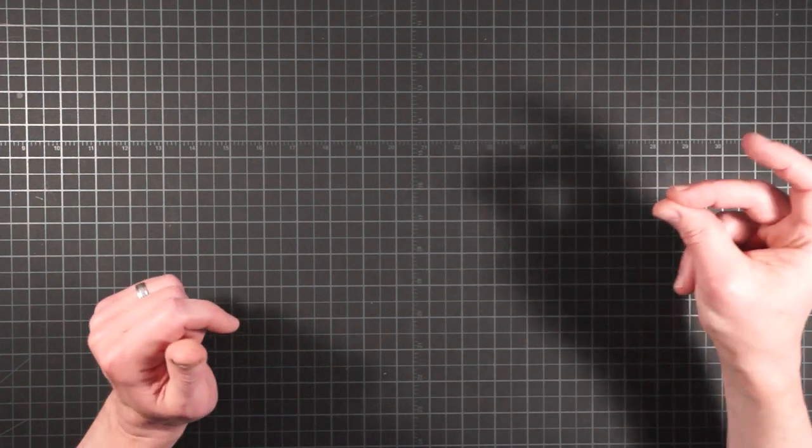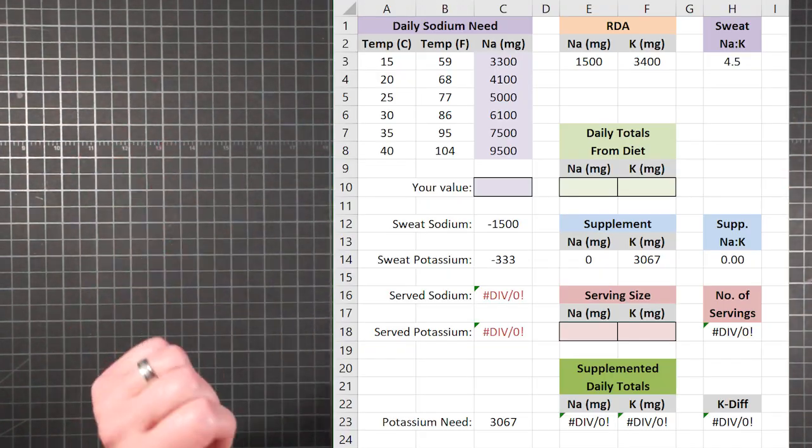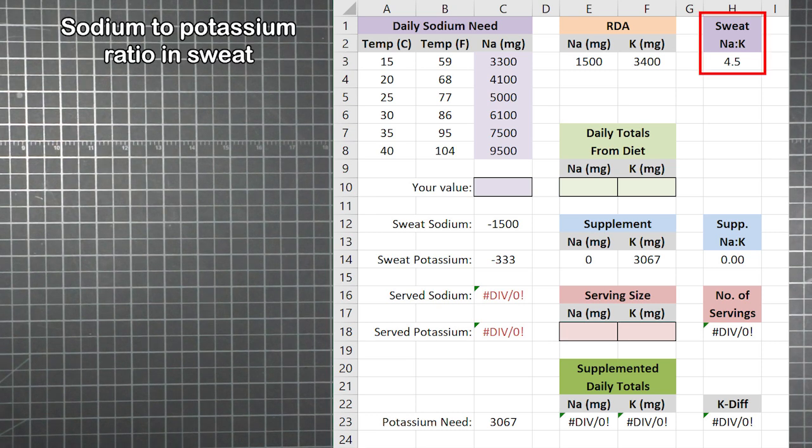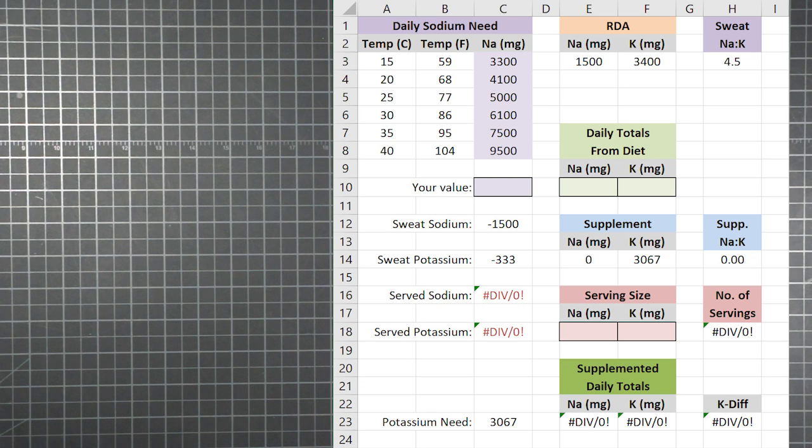And speaking of that calculator, there it is. You can see that 4.5 I decided upon right here. It's the sweat sodium to potassium ratio. The whole thing is built right out in the open, and you can see what assumptions I've adopted for the formulas used. You should feel free to alter those values wherever your own judgments differ from my own.